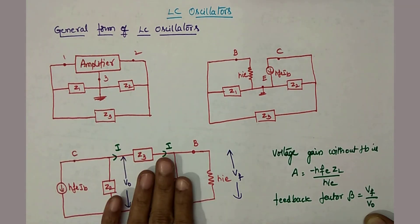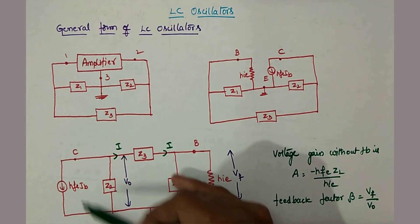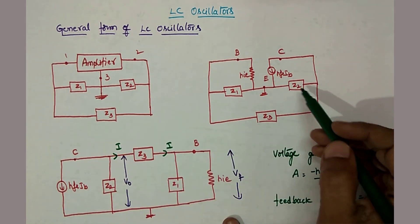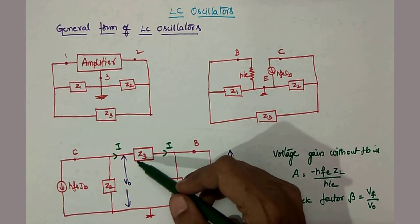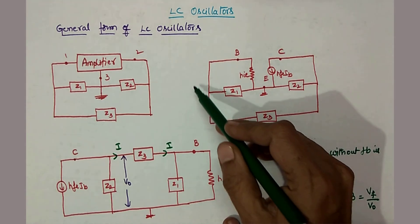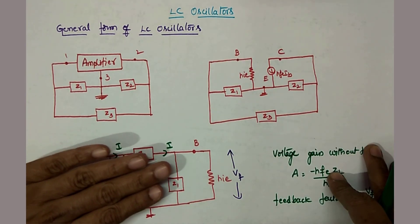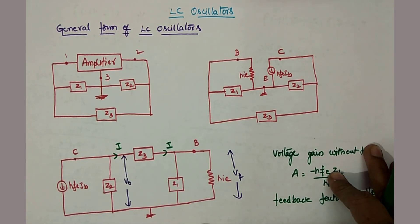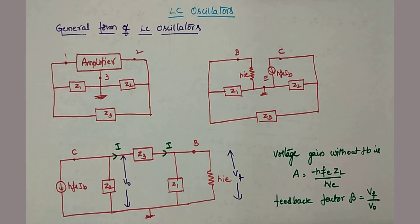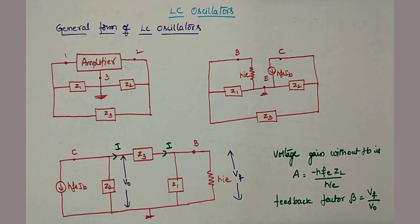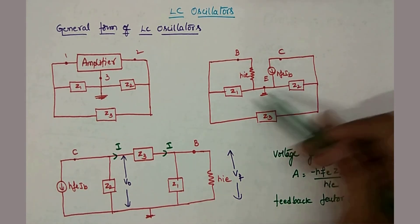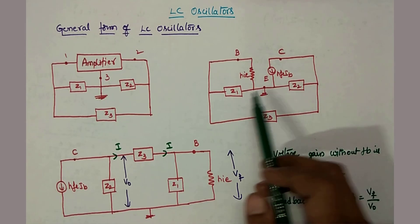Z3 is connected to Z1 and HIE through the base terminal. The collector part is the output part. The entire feedback network — Z1, Z2, Z3 — connects from the output back to the input. In any feedback circuit, the output of the amplifier feeds into the input of the amplifier through the feedback network. The output of the amplifier becomes the input of the feedback network.